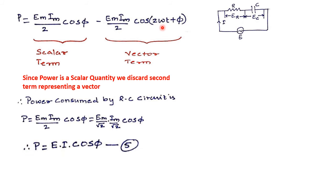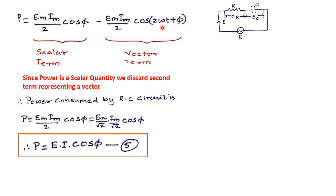The power consumed by the RC circuit is P = EI cos(φ). Recall that the power consumed by the RL circuit was also P = EI cos(φ). Therefore, in general, the power consumed in any AC circuit is given by P = EI cos(φ), where E is the RMS value of supply voltage, I is the RMS value of circuit current, and φ is the angle between voltage and current.